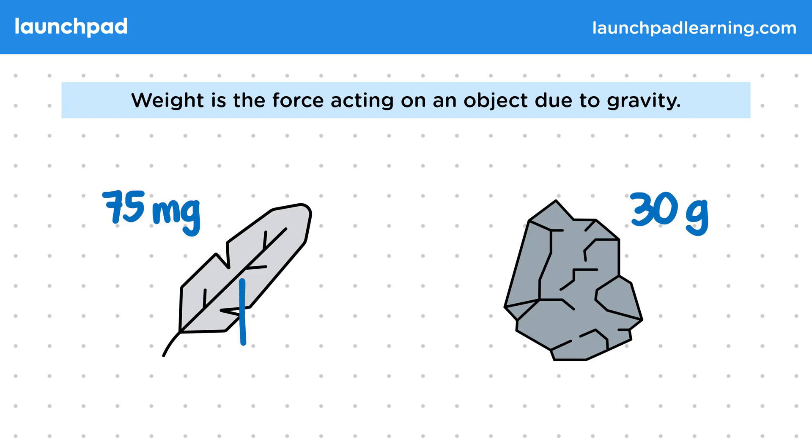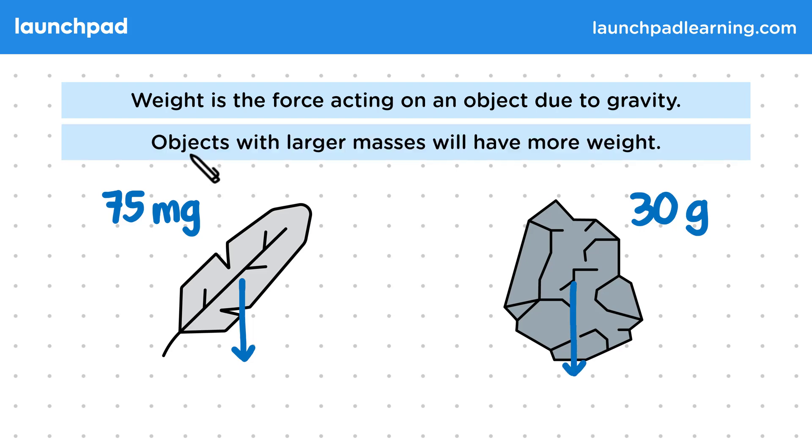In general, we use weight to describe the gravitational force a planet enacts on a smaller object. Objects with larger masses will have more weight. So in this example, the feather has a weight of 0.0007 newtons, and the rock 0.3 newtons. The rock has more weight as it has a larger mass.